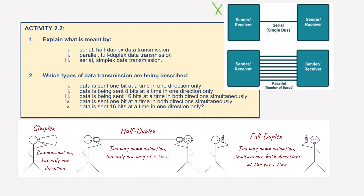The other type of transmission is parallel. Parallel can send several bits of data down several wires — multiple wires, as you can see here — in parallel at the same time. One wire per bit is used. This is great for short distances, especially inside computers. If used over long distances, the data might become skewed, where all the data doesn't arrive at the same time to the receiver.